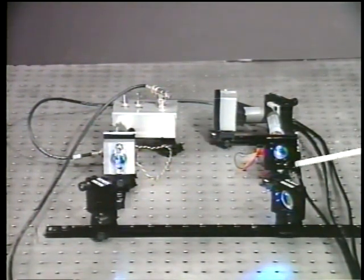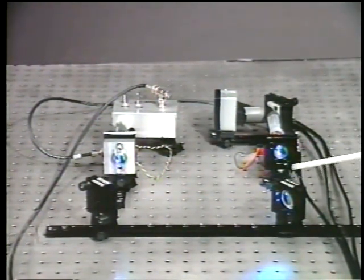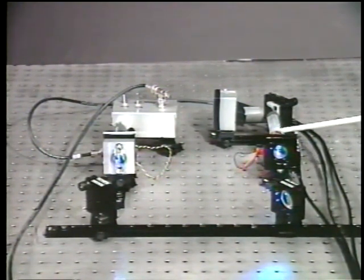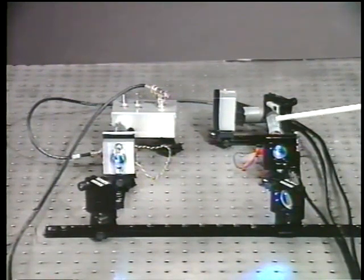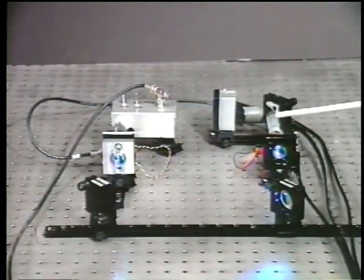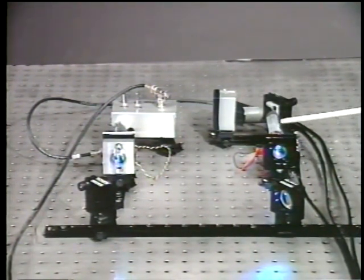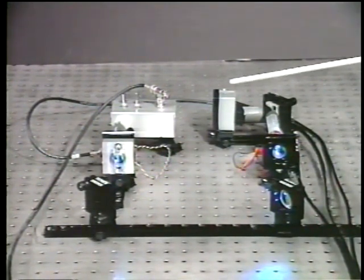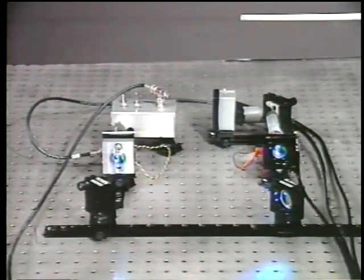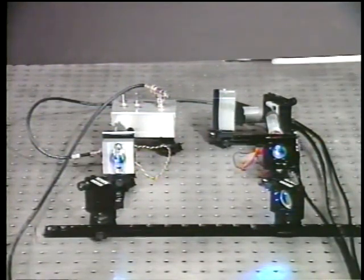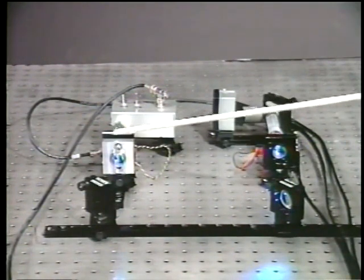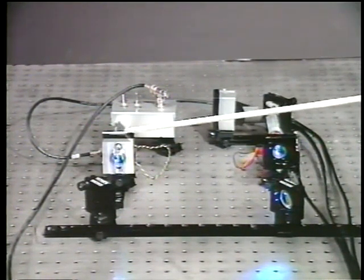At the same time, we have a beam splitter here. We're going to reflect a little bit of the light into another scanning Fabry-Perot interferometer, over here. This is a longer cavity with a free spectral range of 1.5 gigahertz. The detector for this cavity is over here. First, we're going to look at the spectrum of the laser light with the 15 gigahertz free spectral range cavity.